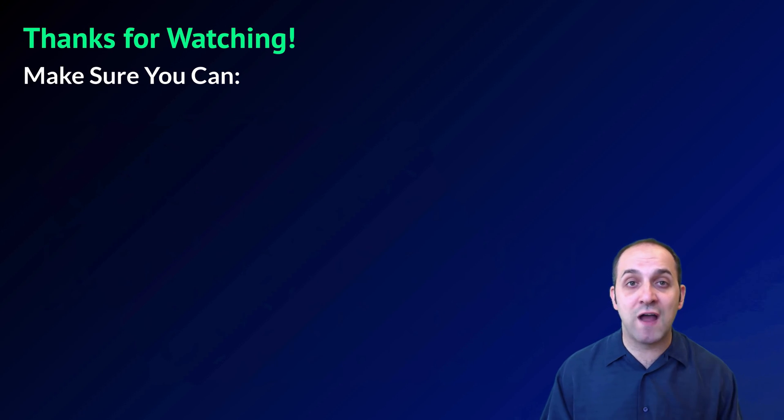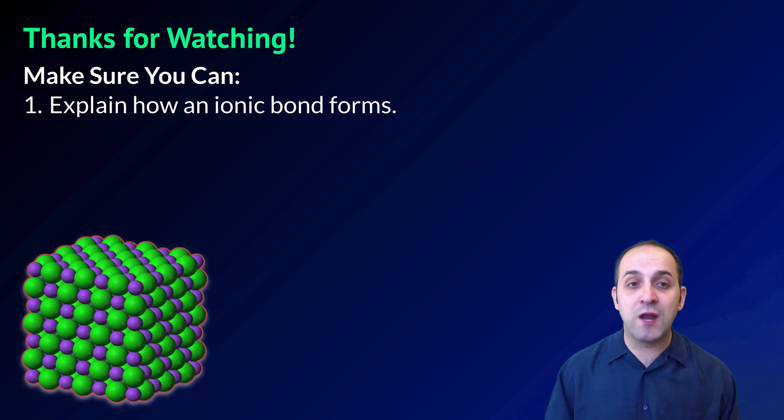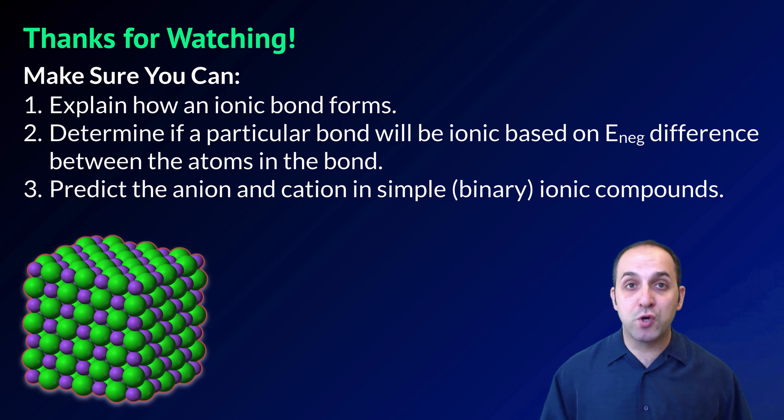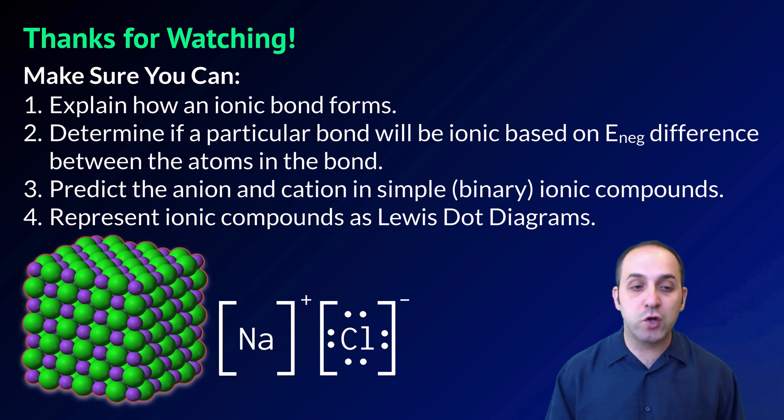Thanks so much for watching our discussion of ionic bonds. Make sure you can do the following things here at the end. Make sure you can explain how an ionic bond forms. Make sure you can determine if a particular bond is going to be ionic based on the electronegativity difference between the atoms in the bond. Make sure you can predict the anion and the cation in simple binary ionic compounds, compounds made out of two different ions put together. And finally, make sure that you can represent ionic compounds as Lewis dot diagrams.